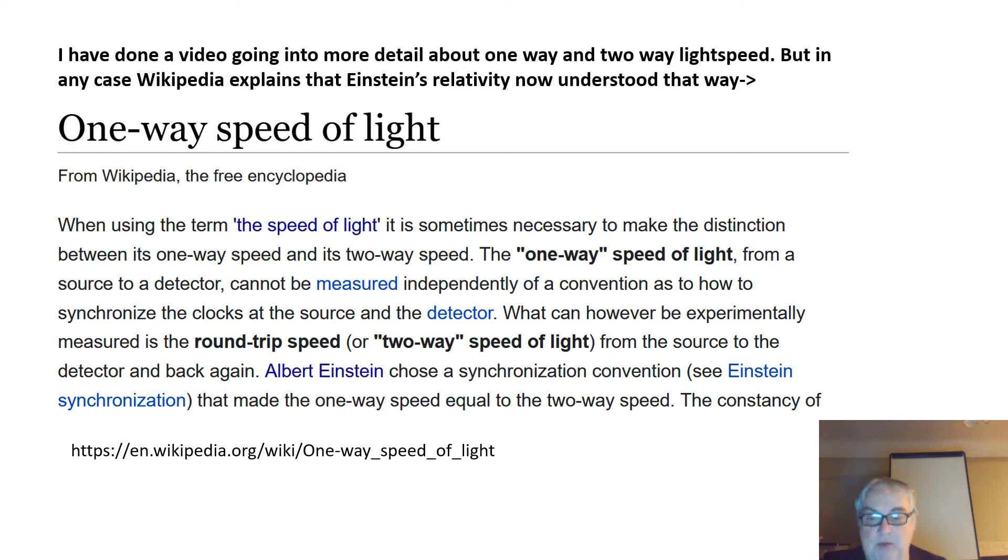The distance is there and back, so it's two-way light speed. But you're not actually measuring the one-way light speed, which is from the source covering a certain distance to the mirror. You're not measuring that speed. This is gone into in more detail in my video.